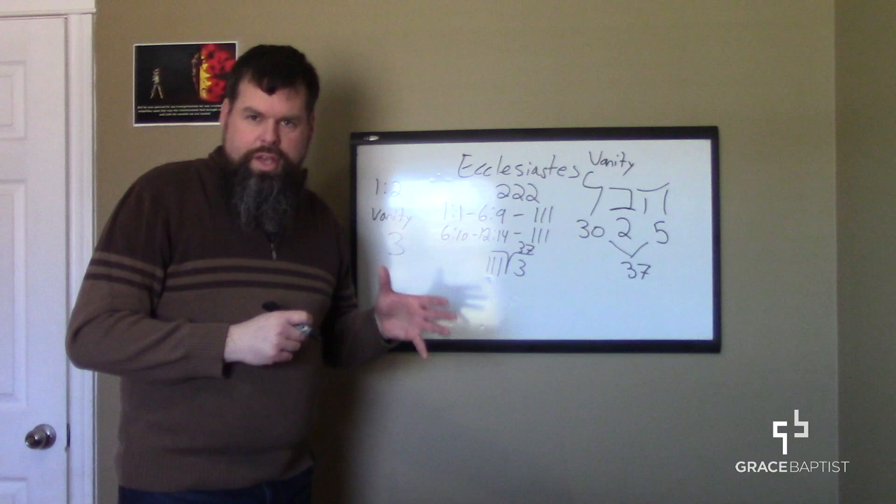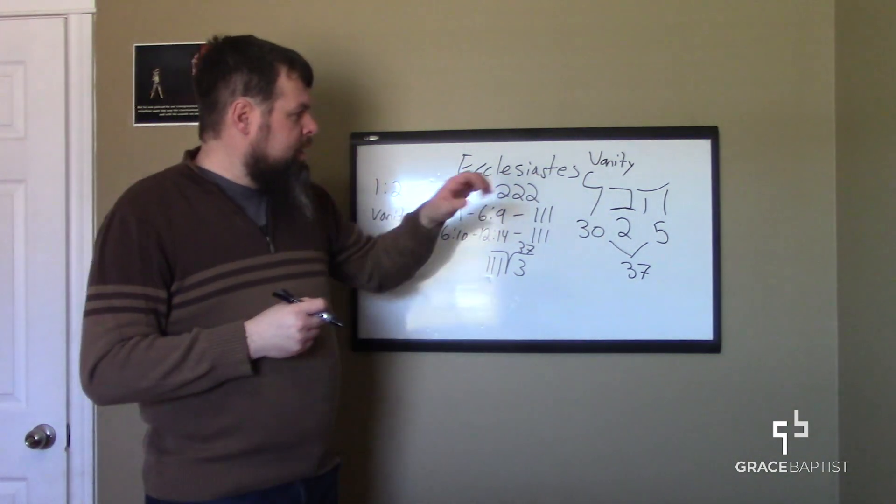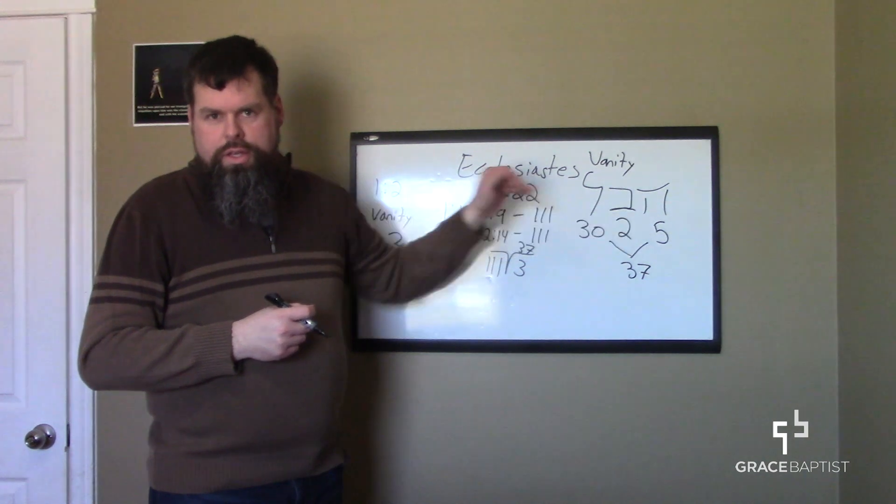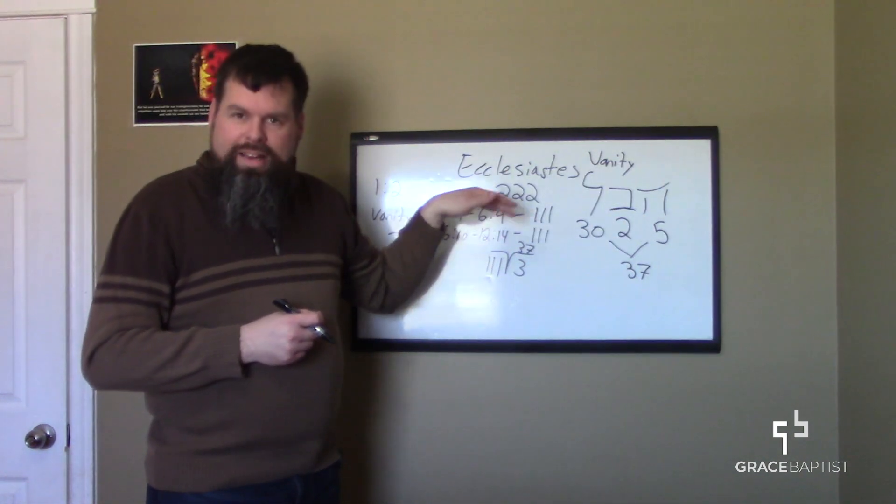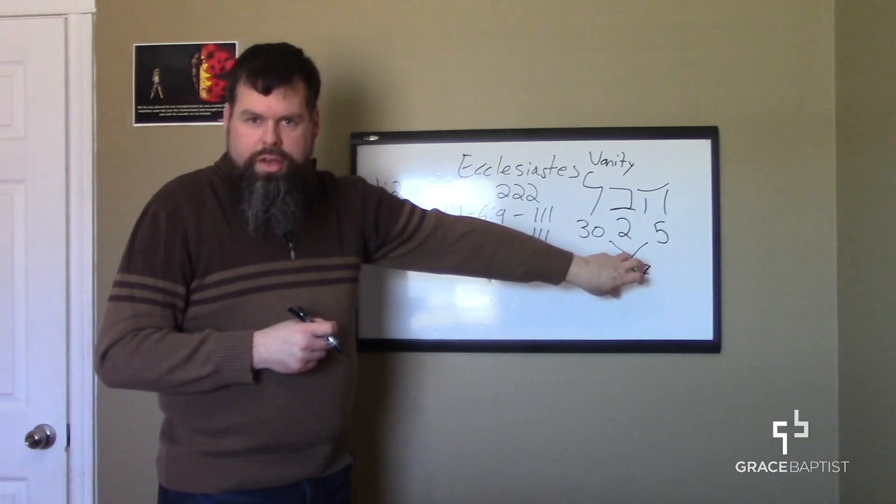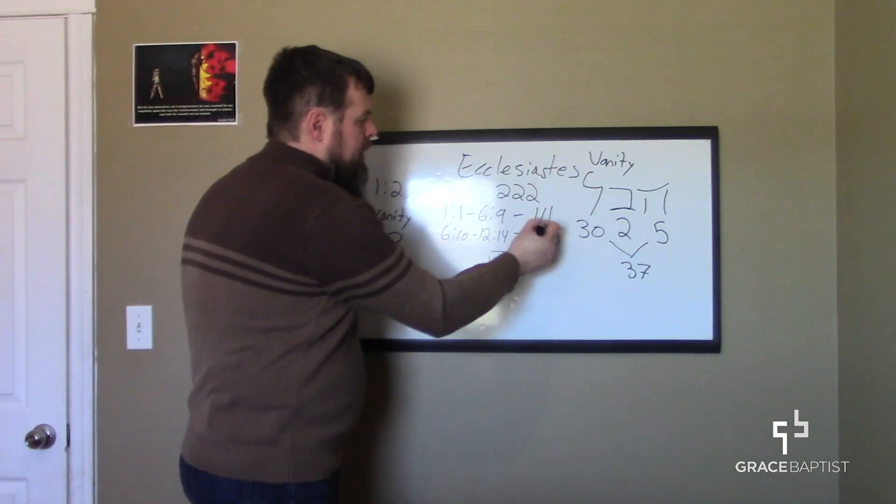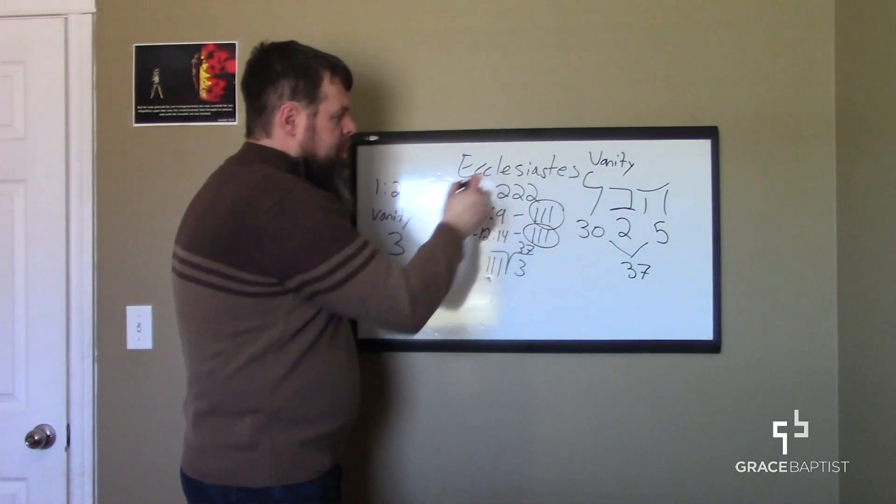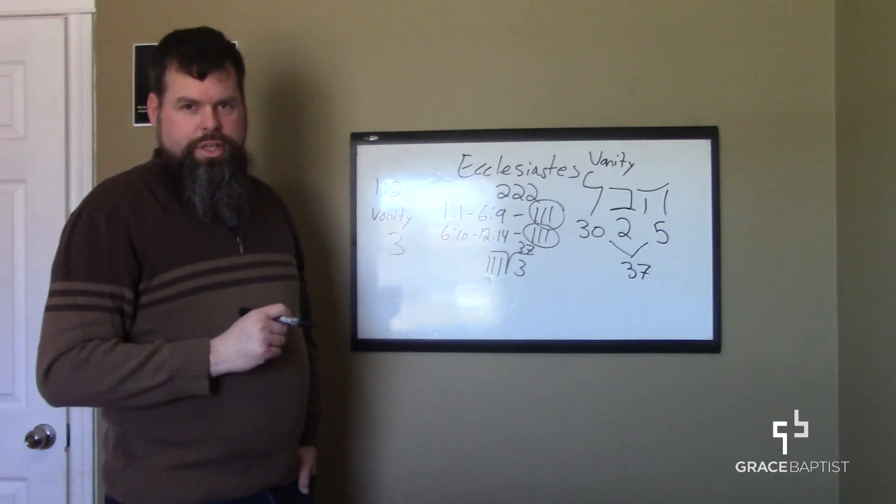So it's almost as if the writer of the book of Ecclesiastes is letting us know, take that word, that word, hey-bet-lamed, meaninglessness, nothingness, vanity, numerical value of 37, multiply it by three times, and you get 111. The two sections of the 222 poetic verses of Ecclesiastes.